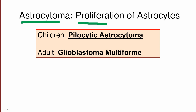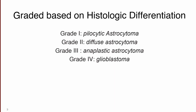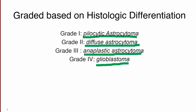Astrocytoma is defined as the proliferation of astrocytes. In children, we call it pilocytic astrocytoma, and in adults, glioblastoma multiforme — these are the two extreme classes. Grading is based on spherical differentiation: Grade 1 is pilocytic astrocytoma, Grade 2 is diffuse astrocytoma, Grade 3 is anaplastic astrocytoma, and Grade 4 is glioblastoma. Grades 1 and 2 are benign; grades 3 and 4 are malignant.